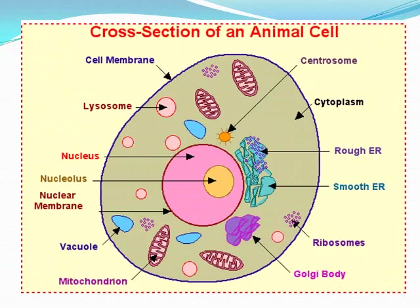This is the diagram of a simple animal cell in which you can see all the different cell organelles. After this, we are going to learn about the different cell organelles.